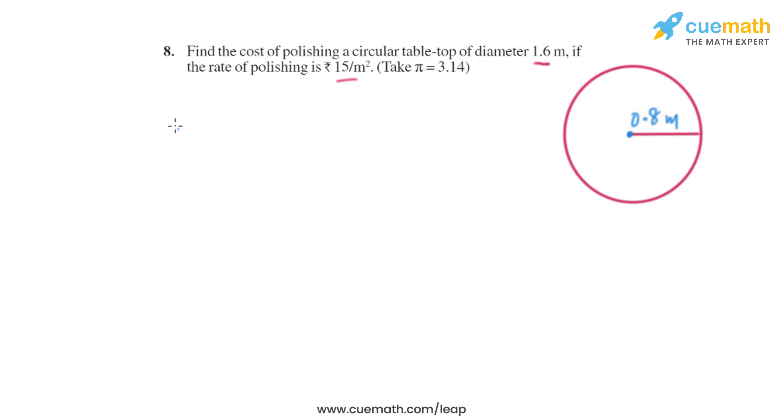We need to find the area of the circle. The formula to find the area of a circle is A = πr². π is given as 3.14, and we will take the radius...